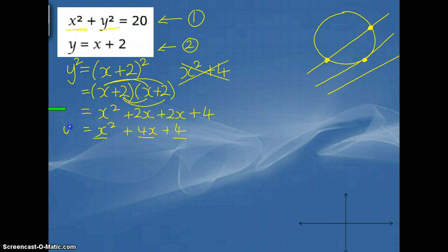OK, so we now know that y-squared is equal to x-squared plus 4x plus 4. And we can now substitute that into equation 1. So, whereas equation 1 did say x-squared plus y-squared, I'm now going to write x-squared plus x-squared plus 4x plus 4, because that's what we know that y-squared is equal to.